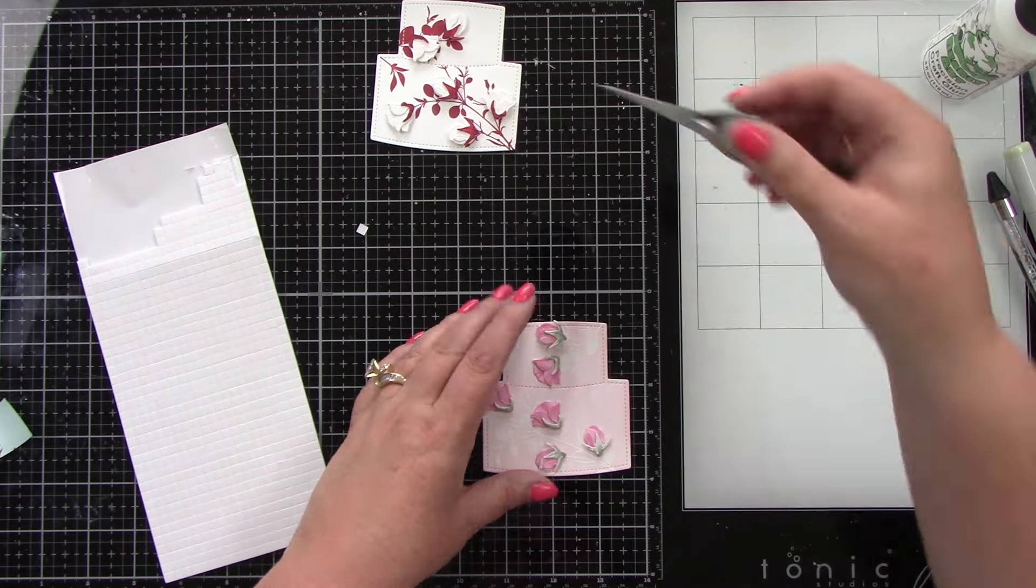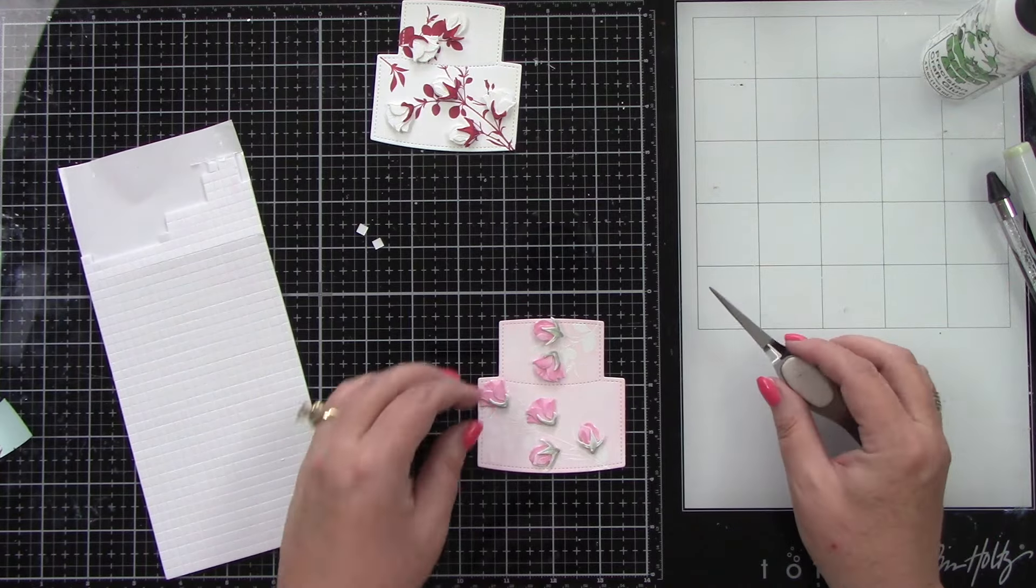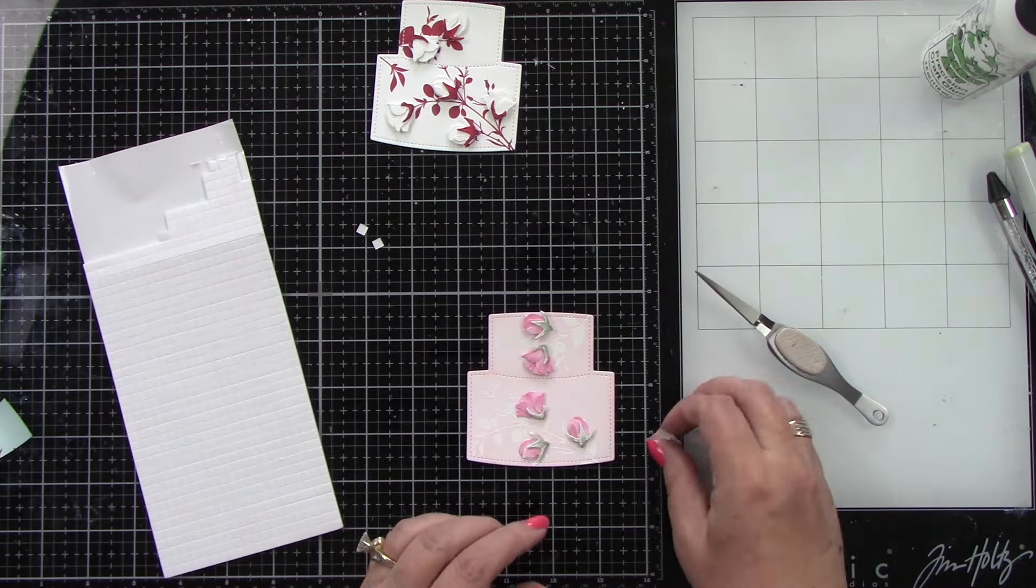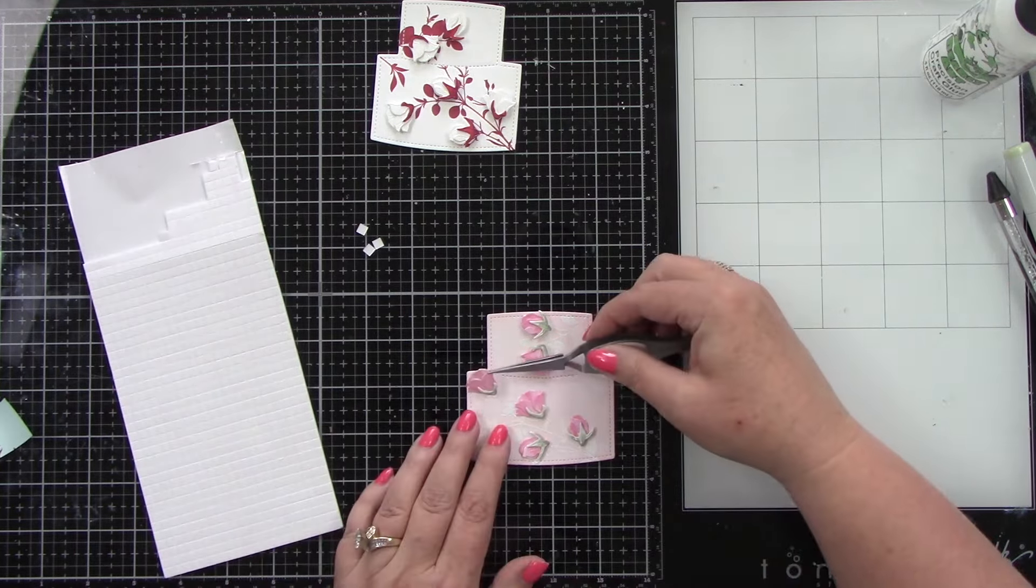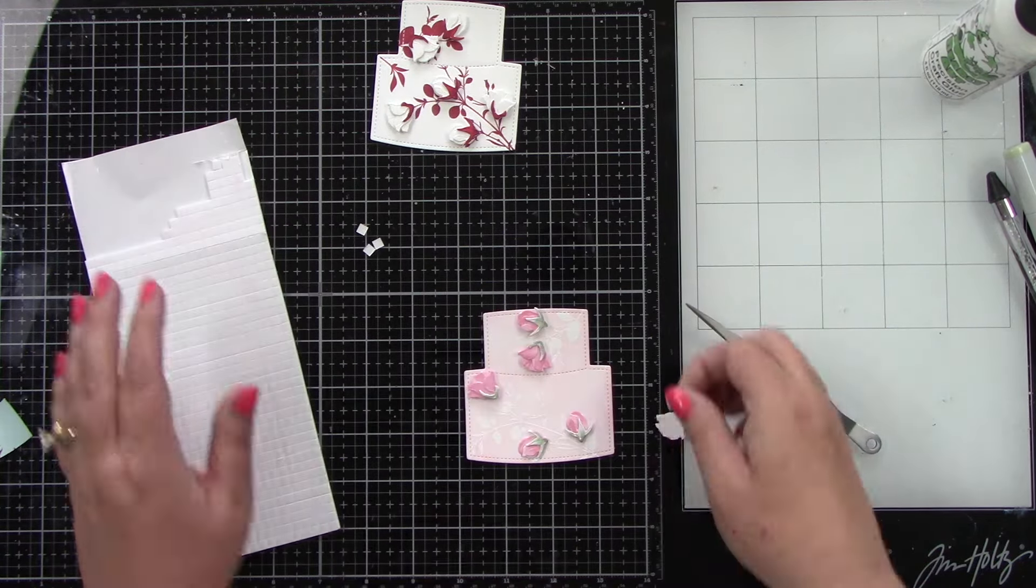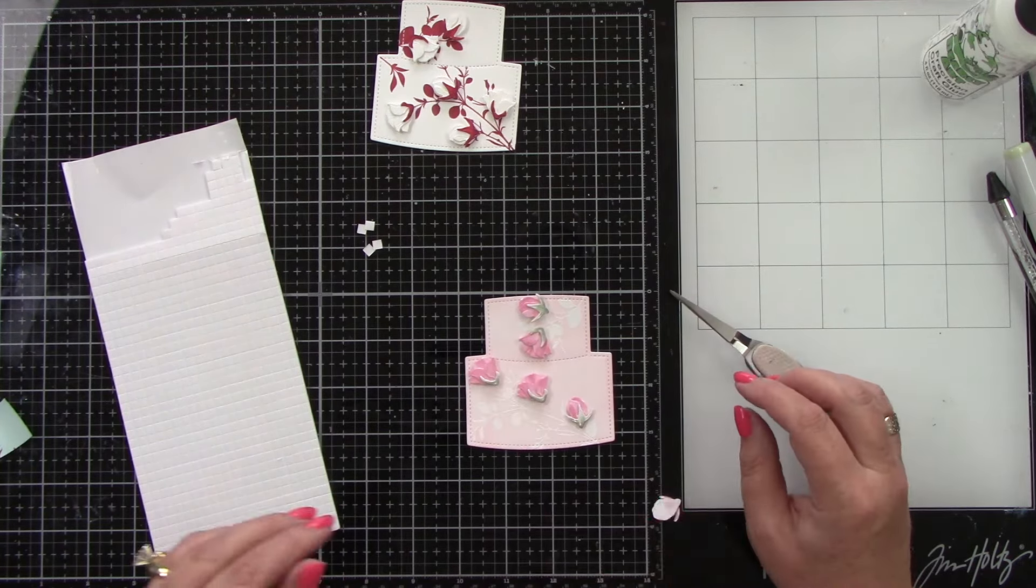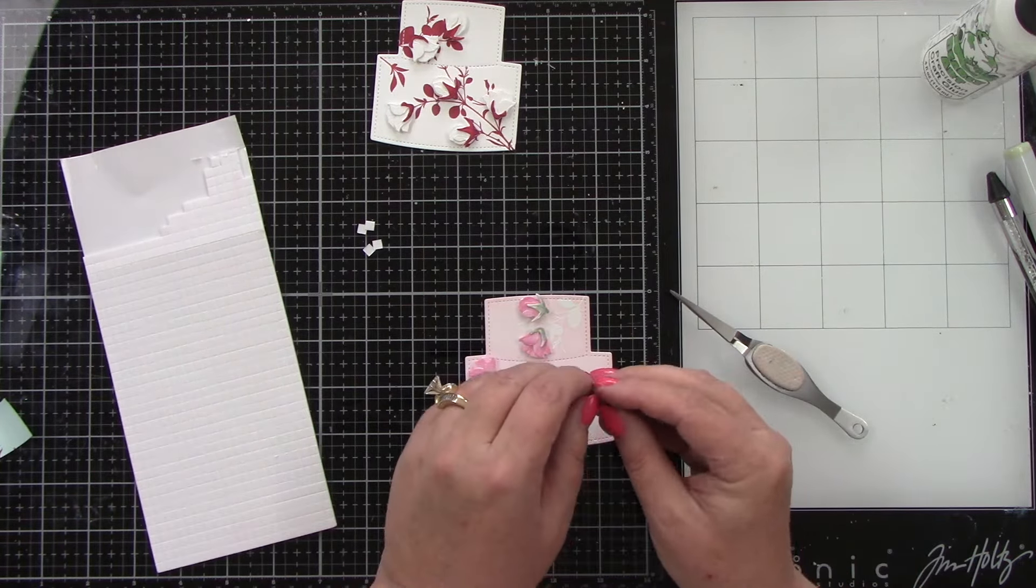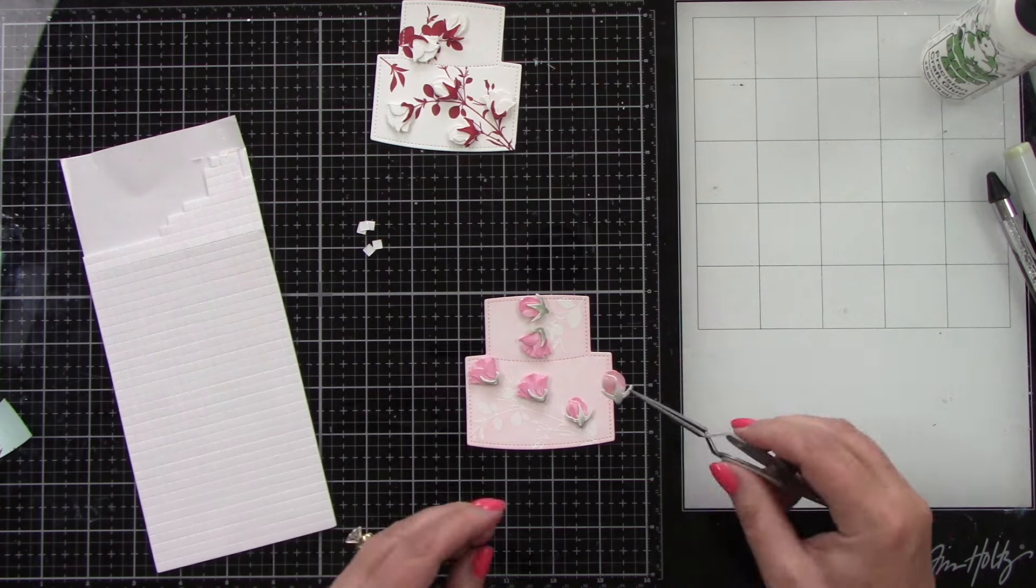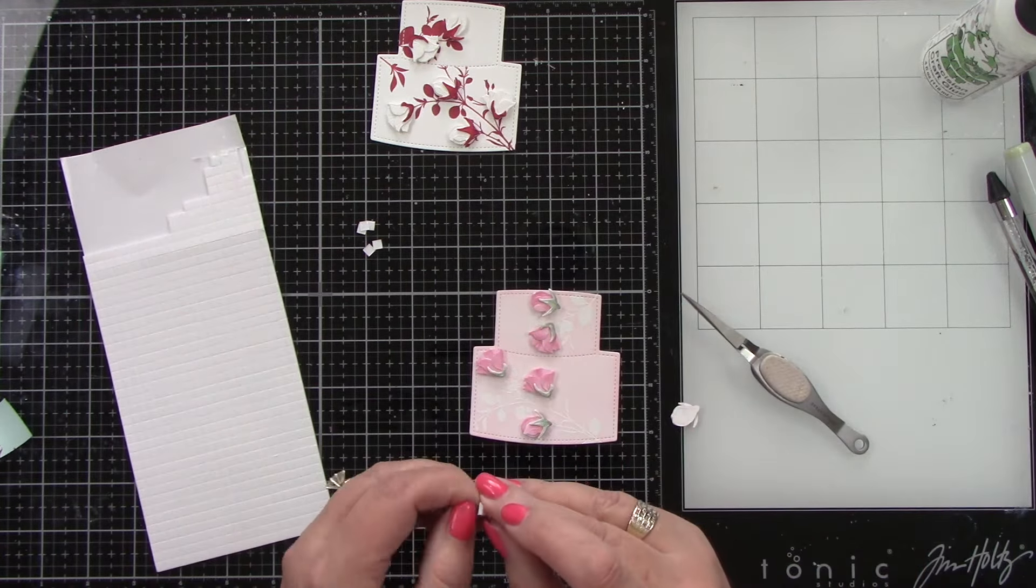Let's do the same thing for the pink ones here. Put those guys in place. I love this embossed background with this pink cake. That white embossing I just think is so pretty. We've got a couple more to put in place here, and then we have all of this beautiful dimension on this really pretty wedding cake.